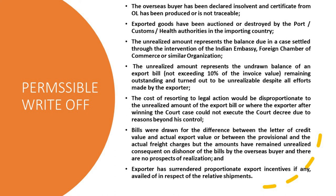Permissible write-off situations: the overseas buyer or importer has been declared insolvent and a certificate from the official liquidator has been produced, or the importer cannot be traced. Exported goods have been auctioned or destroyed by the port or customs or health authorities in the importing country. The unrealized amount represents the balance due in a case settled through the intervention of the Indian Embassy, Foreign Chamber of Commerce, or similar organization. The unrealized amount represents an undrawn balance of the export bill not exceeding 10% of the invoice value. The remaining outstanding amount has turned out to be an unrealizable bill despite all efforts made by the exporter.